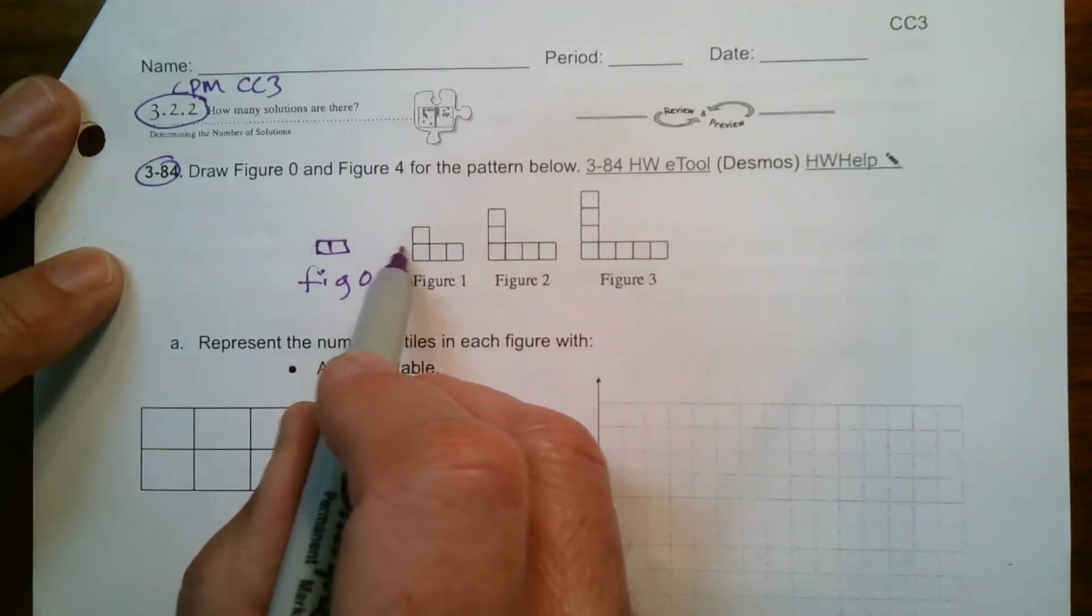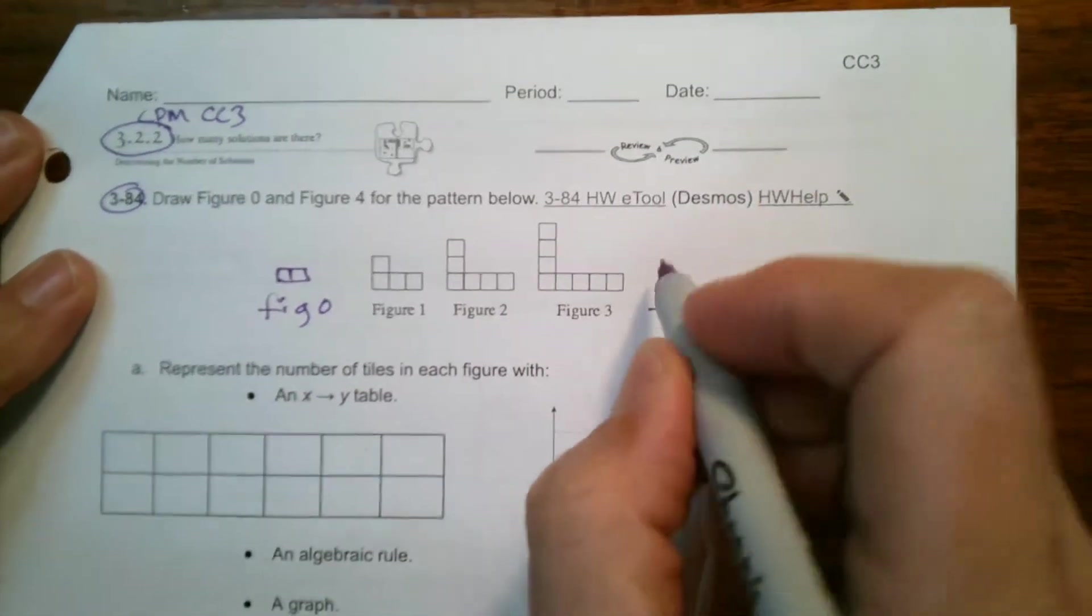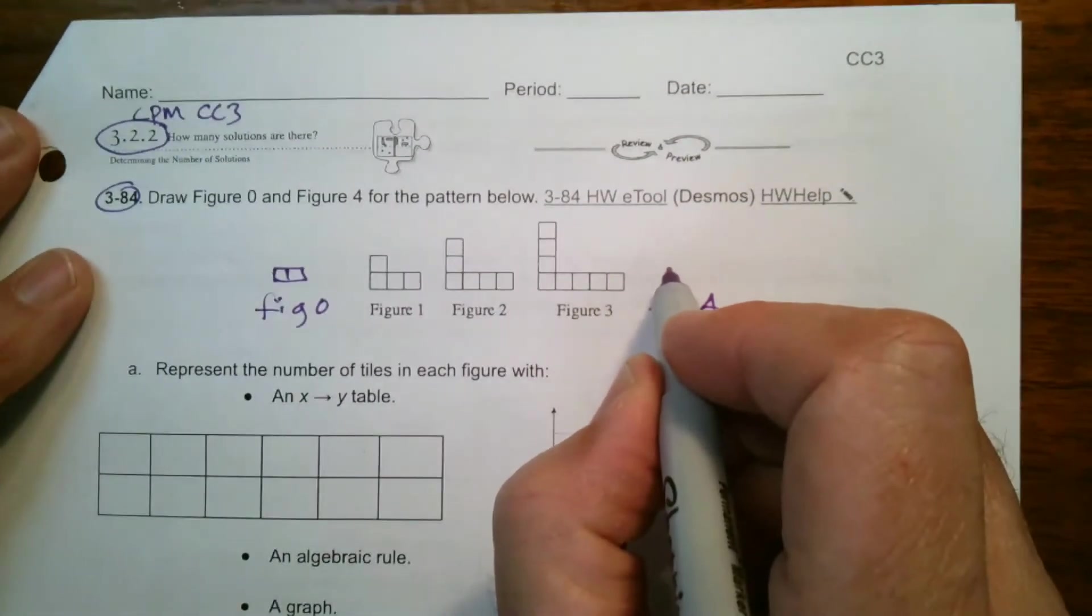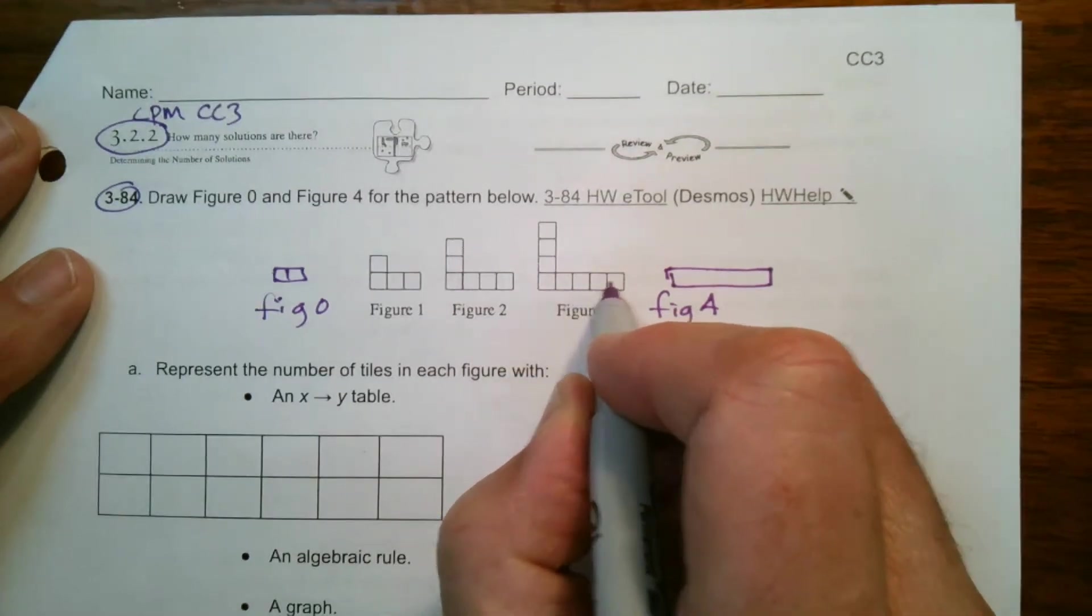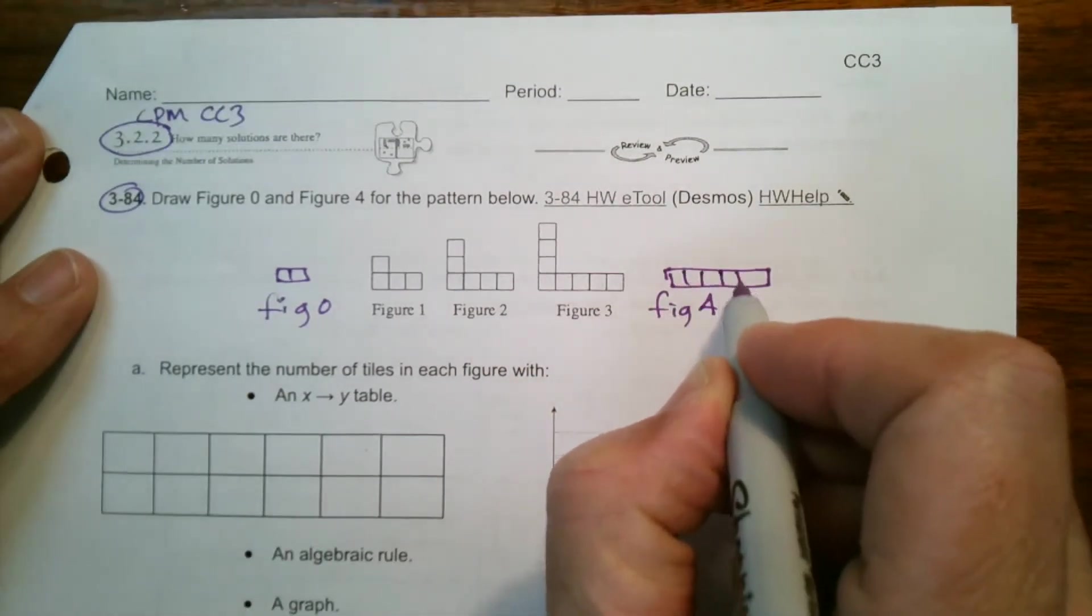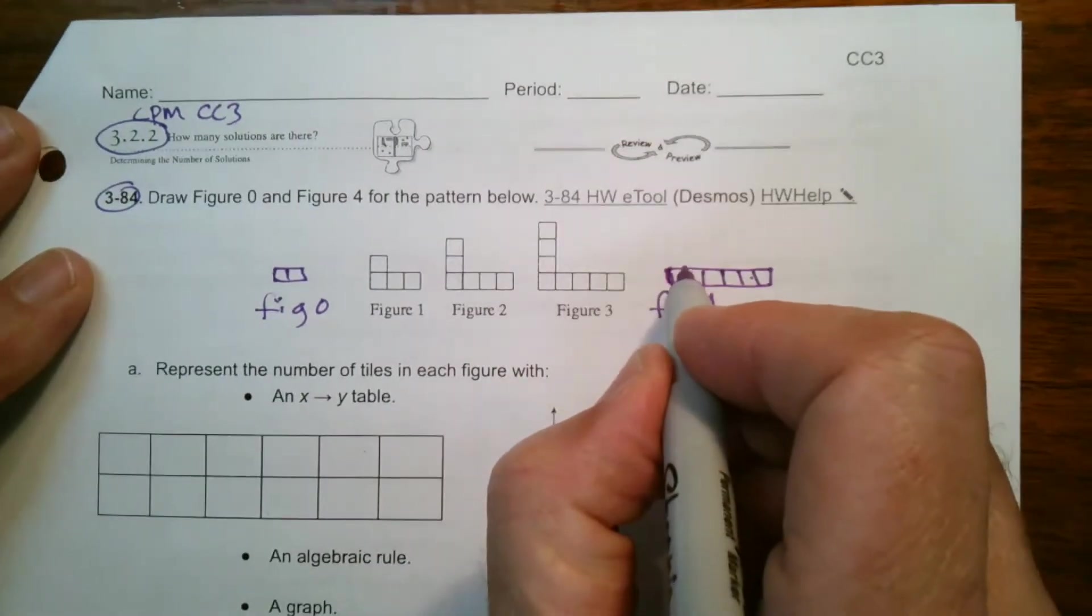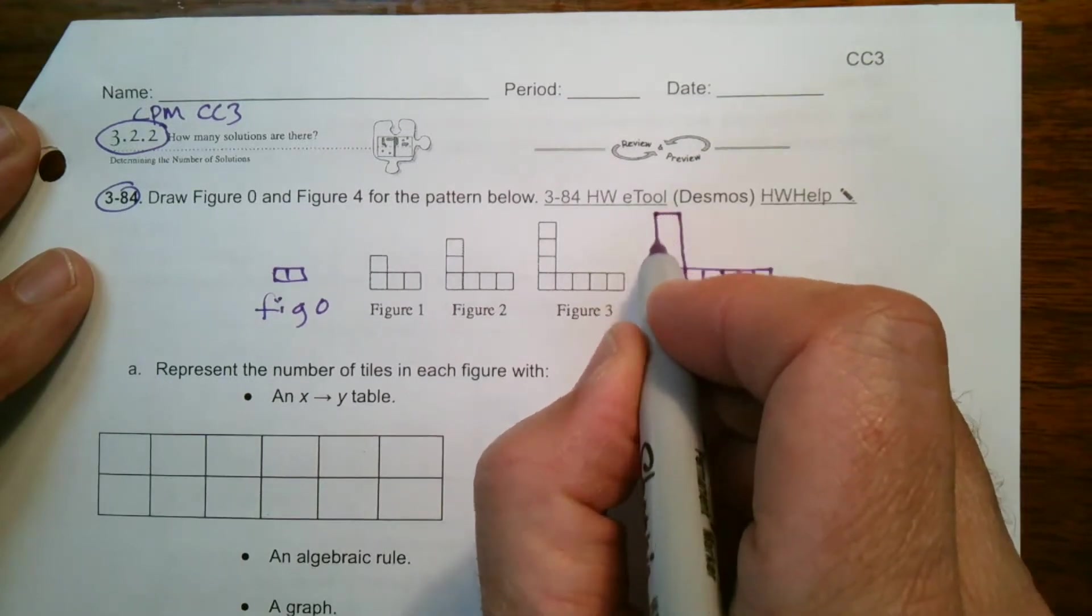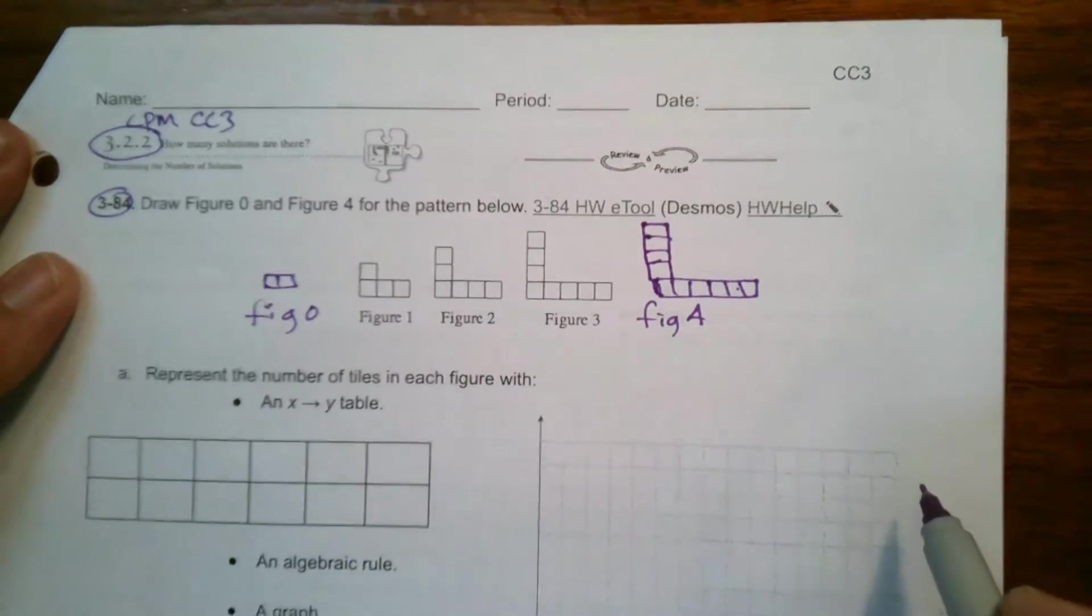So it's going the other way but it's shrinking. So figure four, figure four, let's see, will have on the bottom of it, it's going to have, let's see, one two three four five here. So there's going to be six, one two three four five six in the bottom. This has three so it's going up by one so now it's going to have four. Okay so that's what figure four would look like.